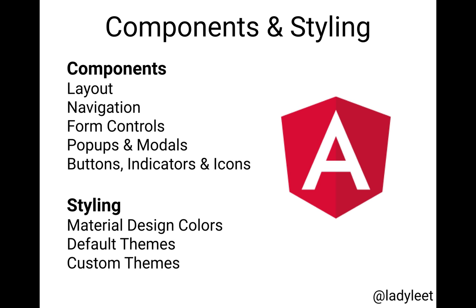The Material Library is basically broken up into two pieces. One of them being components — we have a few different components here. They can be categorized as layout, navigation, form controls, pop-ups and modals, buttons, indicators, and icons, and we also have the data table.